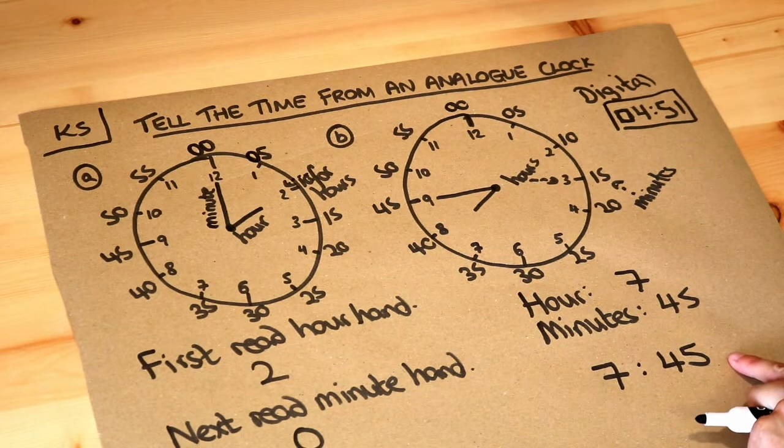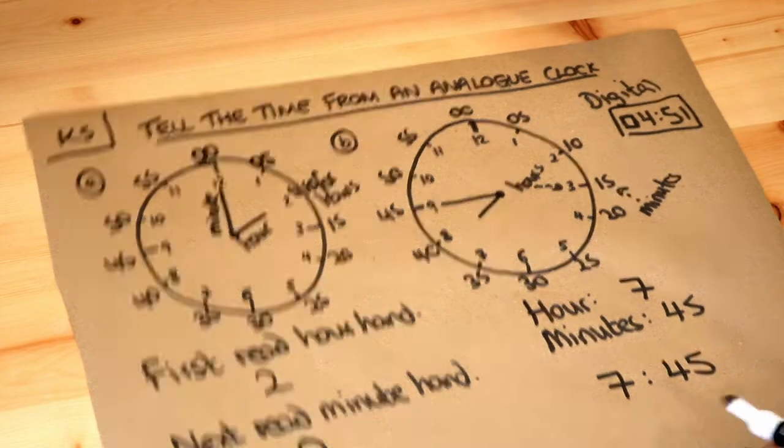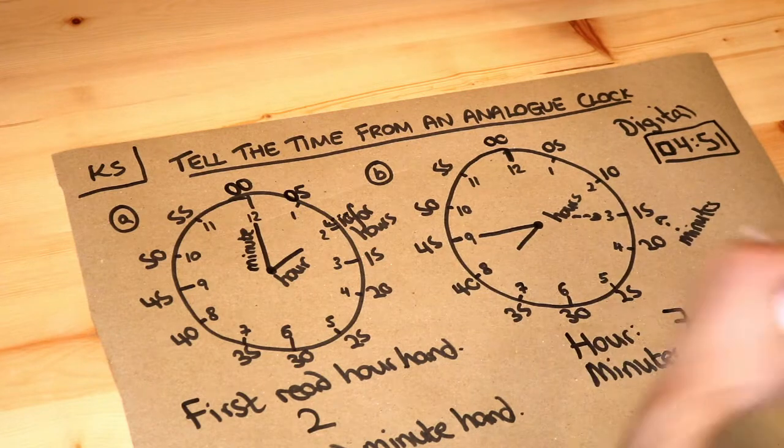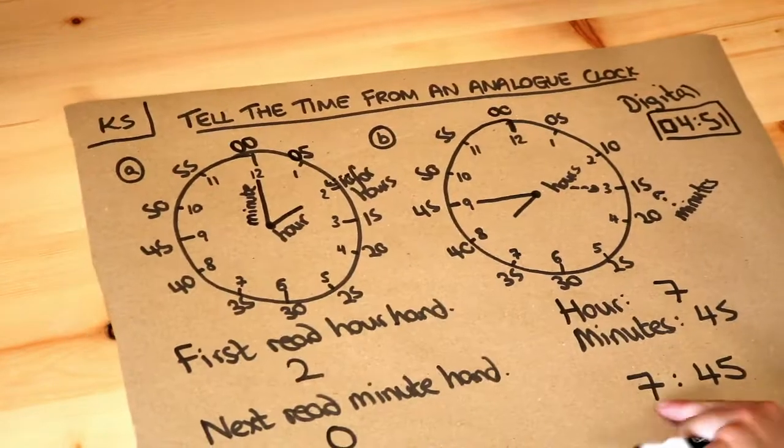Now, you might have seen next to the time PM or AM. We don't have to worry about that because when we look at a clock, we can't tell whether it's in the afternoon or in the morning. So we're just going to leave it at 7:45.